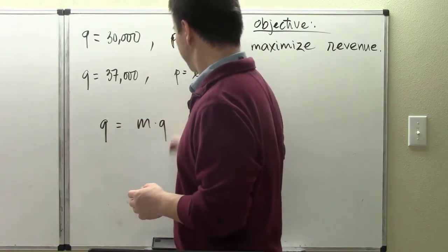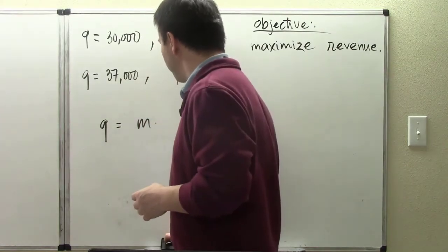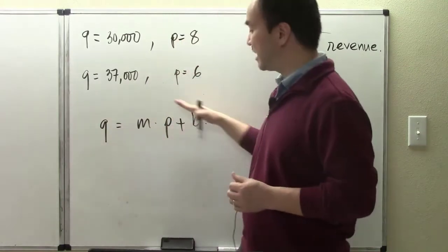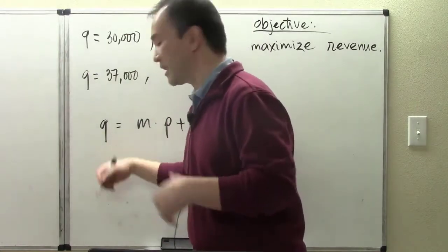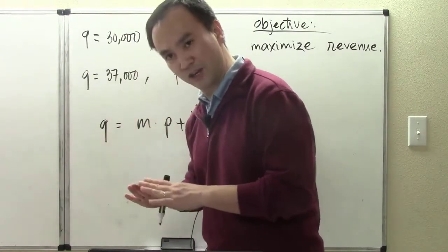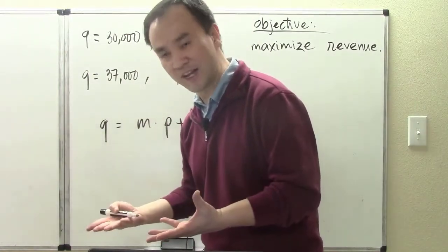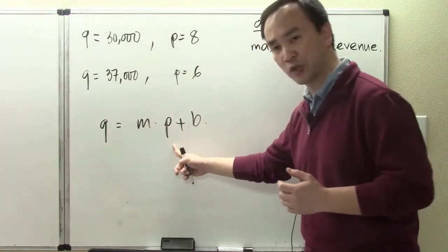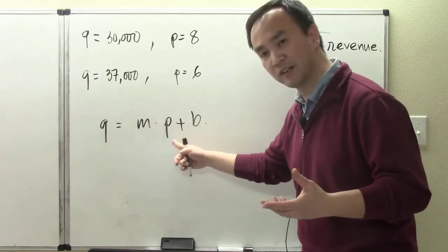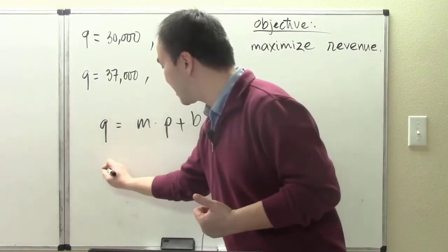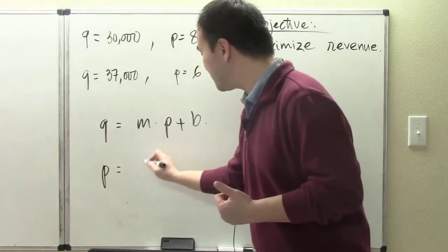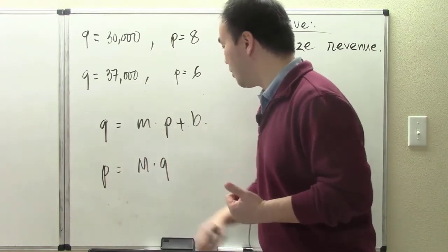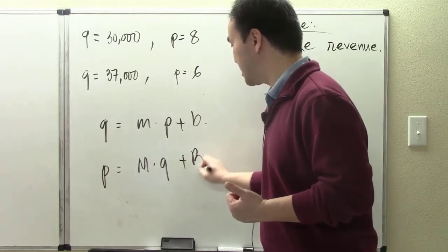The linear relationship means quantity can be a function of price: Q = slope × P + B. That is what it means by a linear relationship. Or we can write it the other way: price equals some slope times Q plus B. So there are two different ways of writing our demand equation — the relationship between attendance and the ticket price.